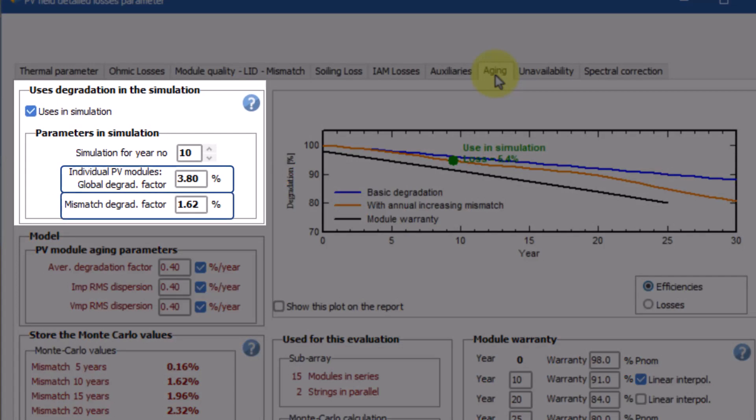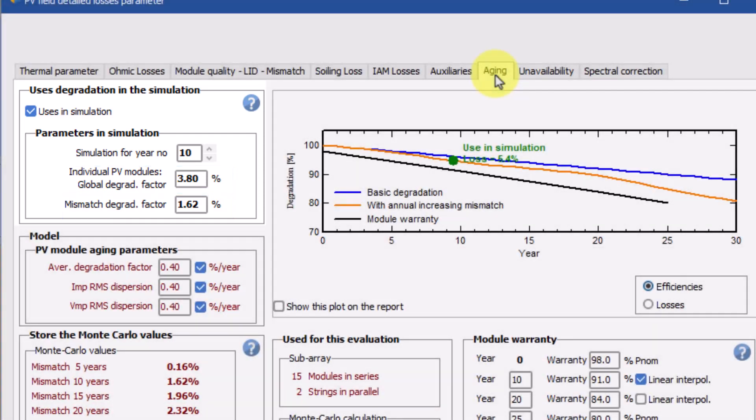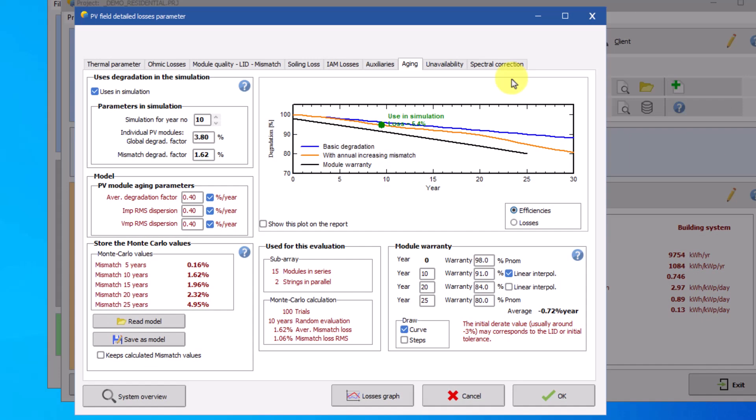The degradation factor indicates the amount by which the PV module efficiency is expected to be reduced for each year of service. You can find the global degradation factor and the mismatch degradation factor in the parameters in simulation section. These values are for an individual PV module for the specified year of simulation.